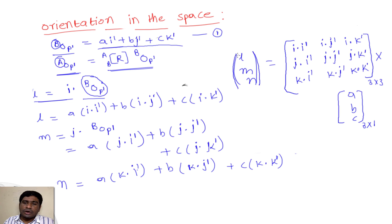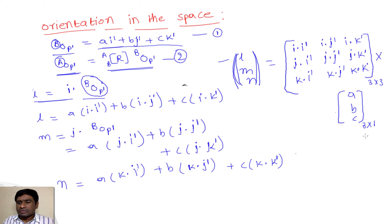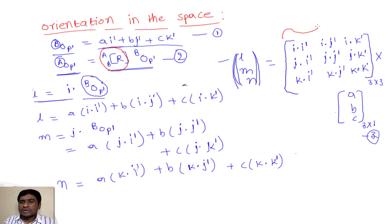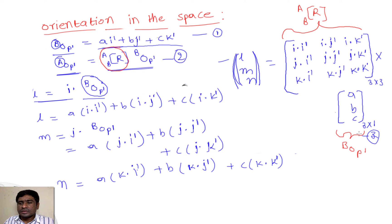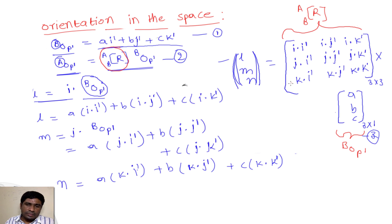If I compare this equation with equation 2, this is equation 3. Comparing equations 2 and 3, this 3x3 part is equivalent to the rotational matrix R from A to B, which is equivalent to the projection B-O-P'. So whenever we want to find out the rotation of a particular frame, we need to apply this simple matrix form and we can find the result.